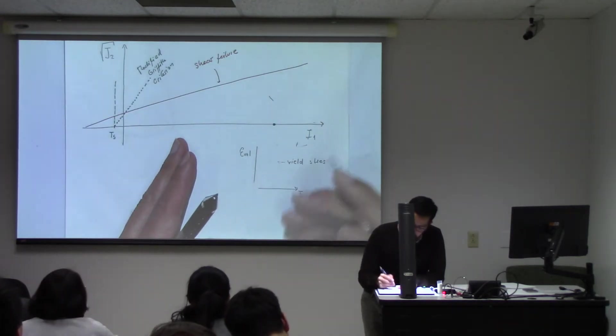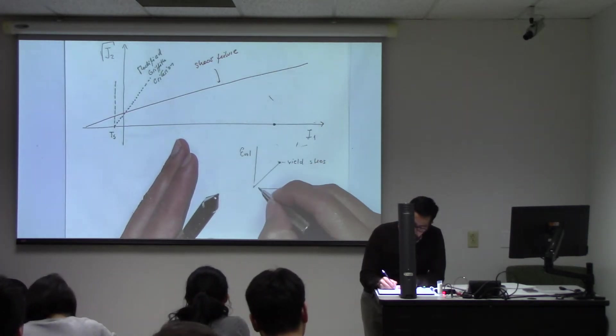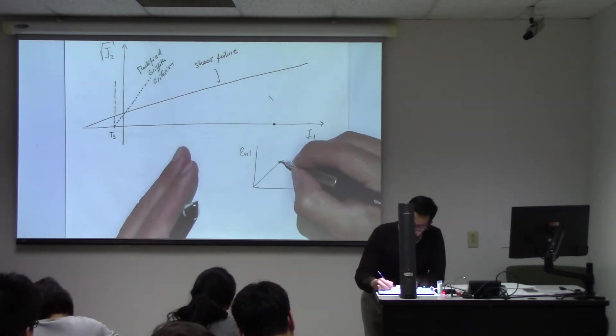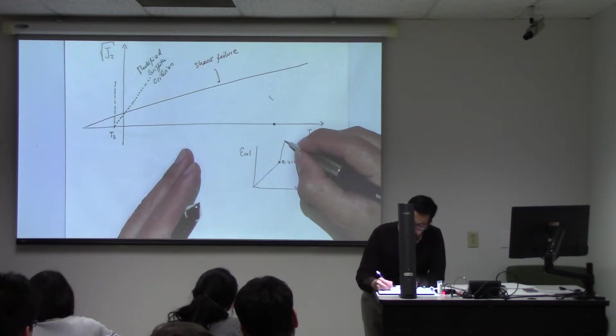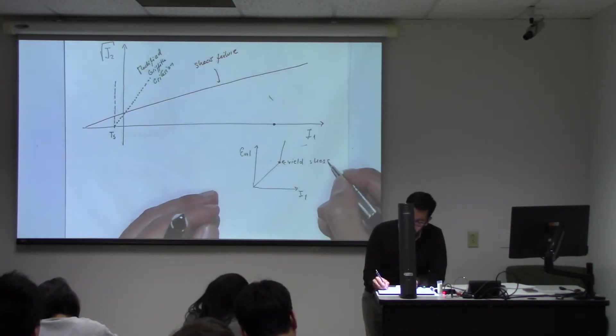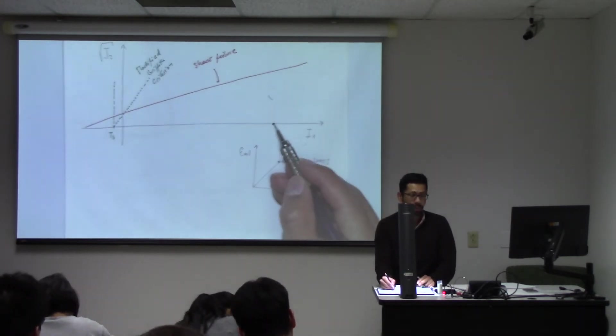So in this case, just by increasing a little bit the compression, you get into huge volumetric strains. So this is going to be a yield stress, and that point is going to be that one.